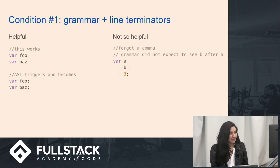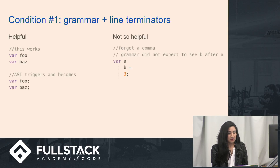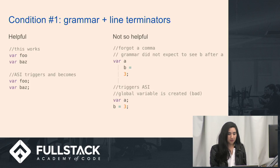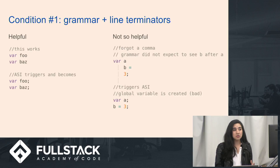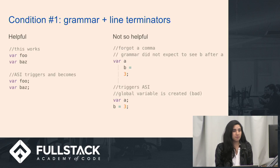However, ASI will also trigger here because it sees a line break where we should have technically put a comma. So it becomes interpreted with a global variable, which isn't what you were going for in this case. This is a case where automatic semicolon insertion creeps up and isn't so helpful.